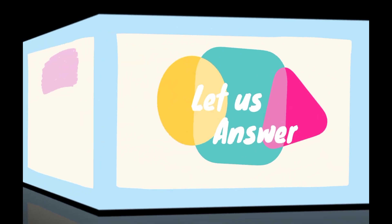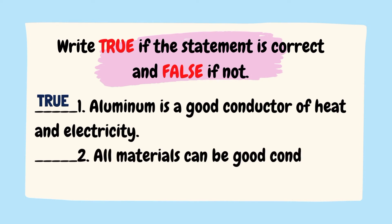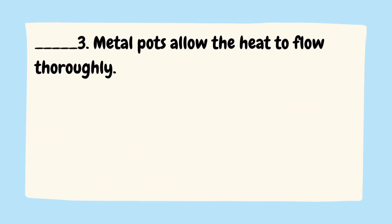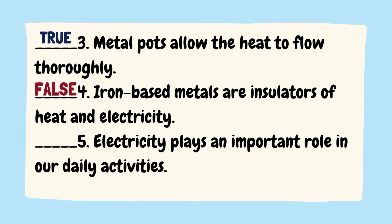Let us answer. Write the word true if the statement is correct and false if not. Number 1: Aluminum is a good conductor of heat and electricity. The answer is… Number 2: All materials can be good conductors of heat and electricity. The answer is… Number 3: Metal pots allow the heat flow thoroughly. Number 4: Iron-based metals are insulators of heat and electricity. Number 5: Electricity plays an important role in our daily activities.